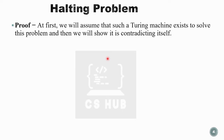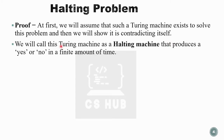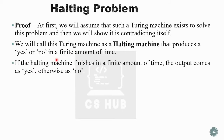The proof is by contradiction. First, we will assume that such a Turing machine exists to solve this problem, and then we will show it contradicts itself. If we say that the halting problem is solved by a Turing machine, we name that Turing machine a halting machine. This halting machine can say whether a Turing machine halts on a particular input or not, producing a yes or no in a finite amount of time.